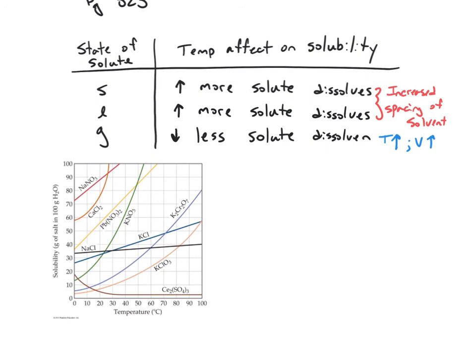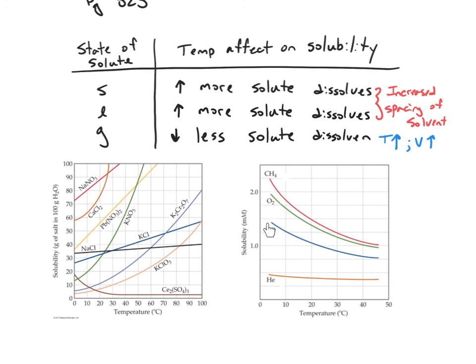Gases dissolve in liquids — a real-world example is carbonated beverages. Warm carbonated beverages release much more gas when opened compared to ice-cold ones. Looking at a graph of four different gases: as temperature increases, less and less gas can be dissolved in liquid. Helium has the lowest effect — almost flat. Carbon monoxide shows an obvious decline. Oxygen also shows an obvious decline. CH4 has the largest decline in solubility with increasing temperature.